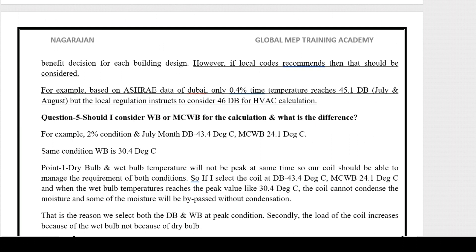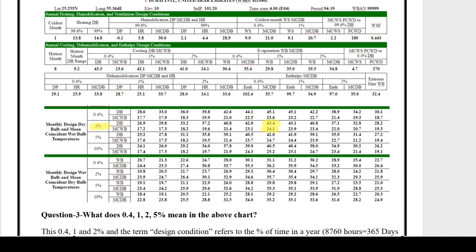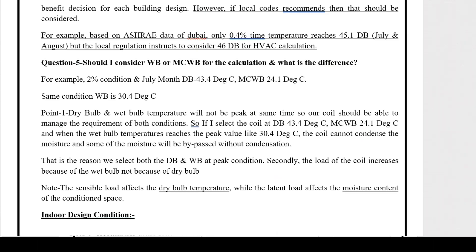Question five: should I consider the design wet bulb or mean coincident wet bulb for the calculation? At 2% for the hottest month, July, the dry bulb is 43.4°C and the mean coincident wet bulb is 24.1°C. But the monthly design wet bulb at the same 2% is 30.4°C — higher than the mean coincident wet bulb. The dry bulb and wet bulb temperatures will not peak at the same time, so the coil should be able to manage the requirements of both conditions.